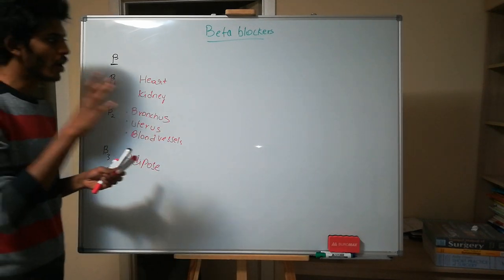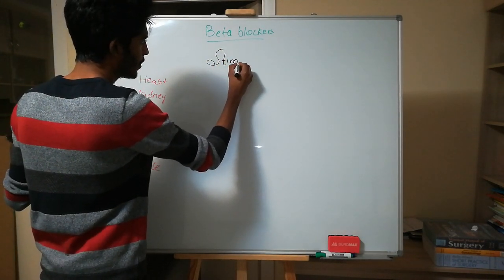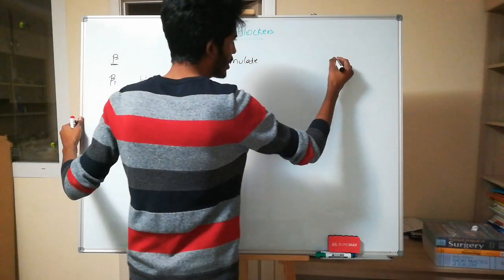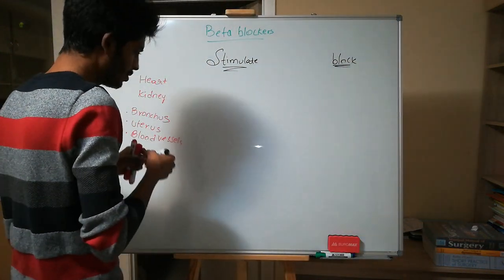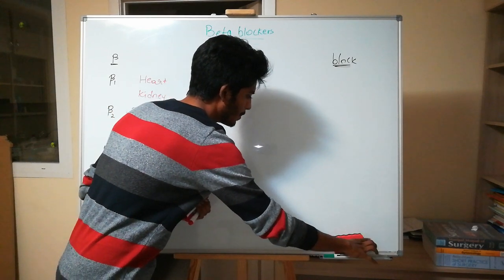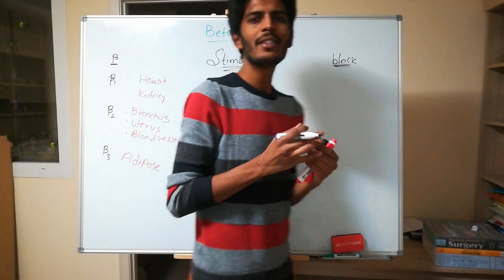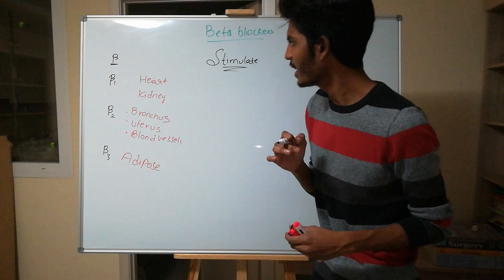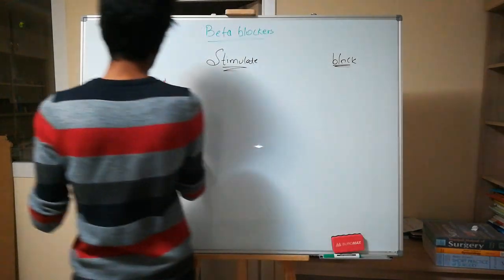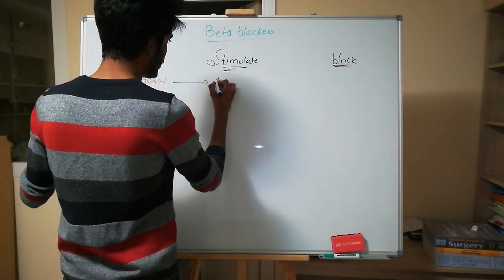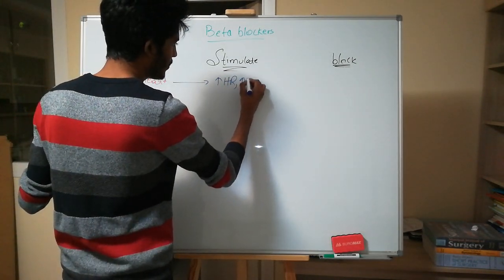Now let's see what happens when we stimulate the receptor and what happens when we block it. Beta 1 receptors are located in the heart. They work with the sympathetic nervous system, so beta 1 stimulation leads to elevated heart rate. It also increases the force of contraction — that is the sympathetic effect on the heart.